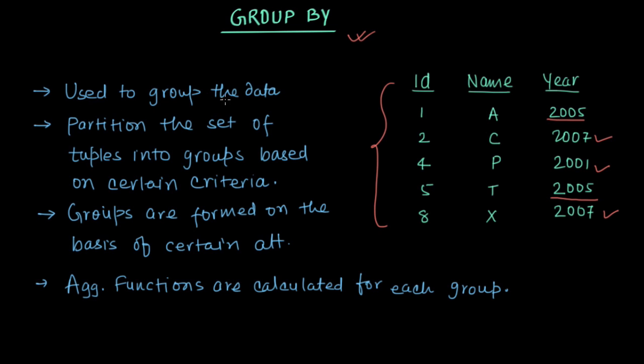So here I have listed down some important points and the first one is like we already discussed. GROUP BY is used to group the data on the basis of certain criteria, certain attribute. We basically partition the set of tuples into groups based on certain criteria. Groups are formed on the basis of some attribute. For example, here we were trying to form groups on the basis of this year attribute.